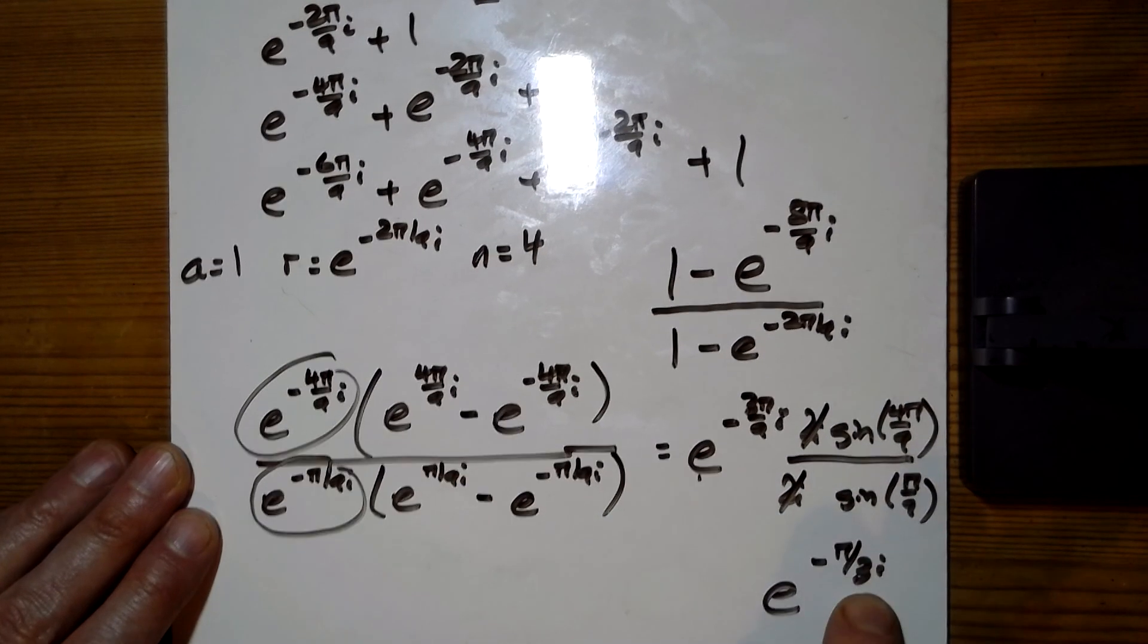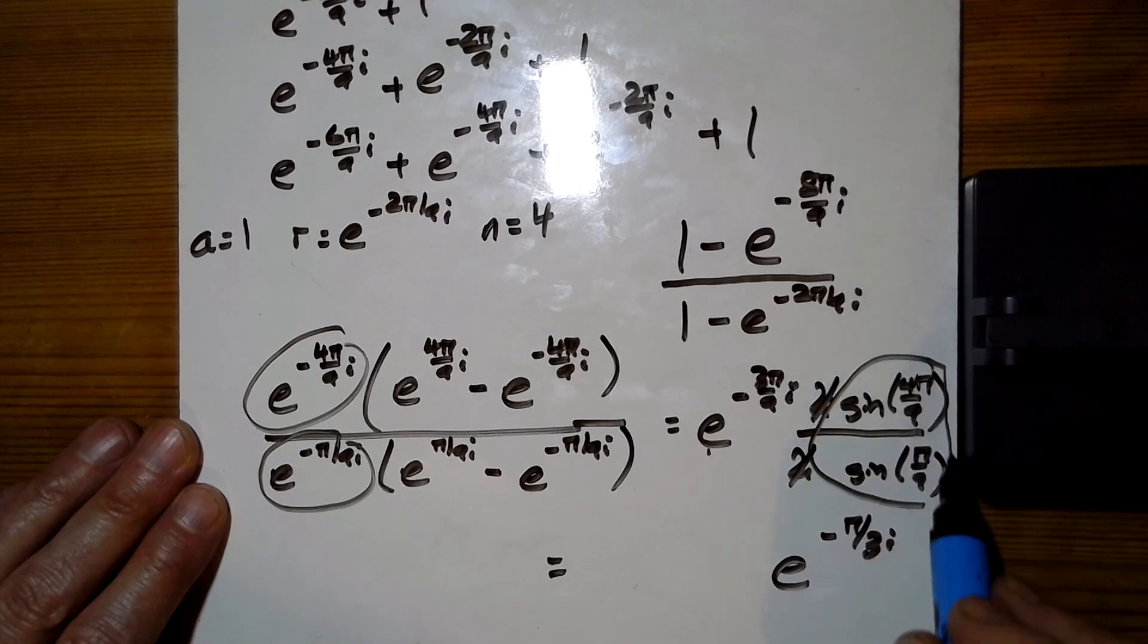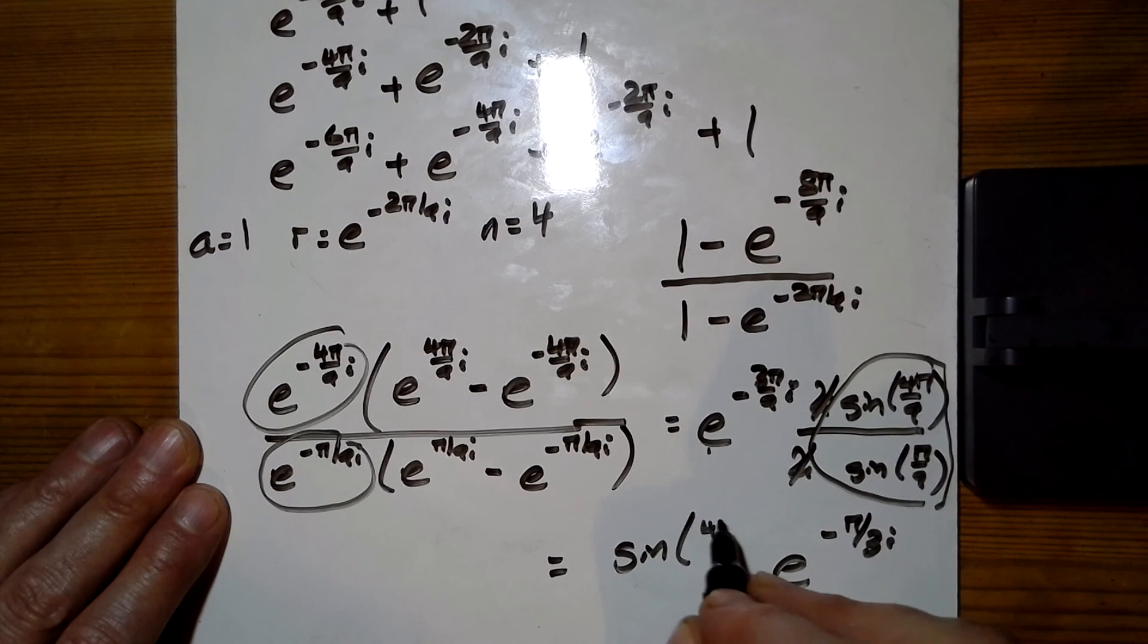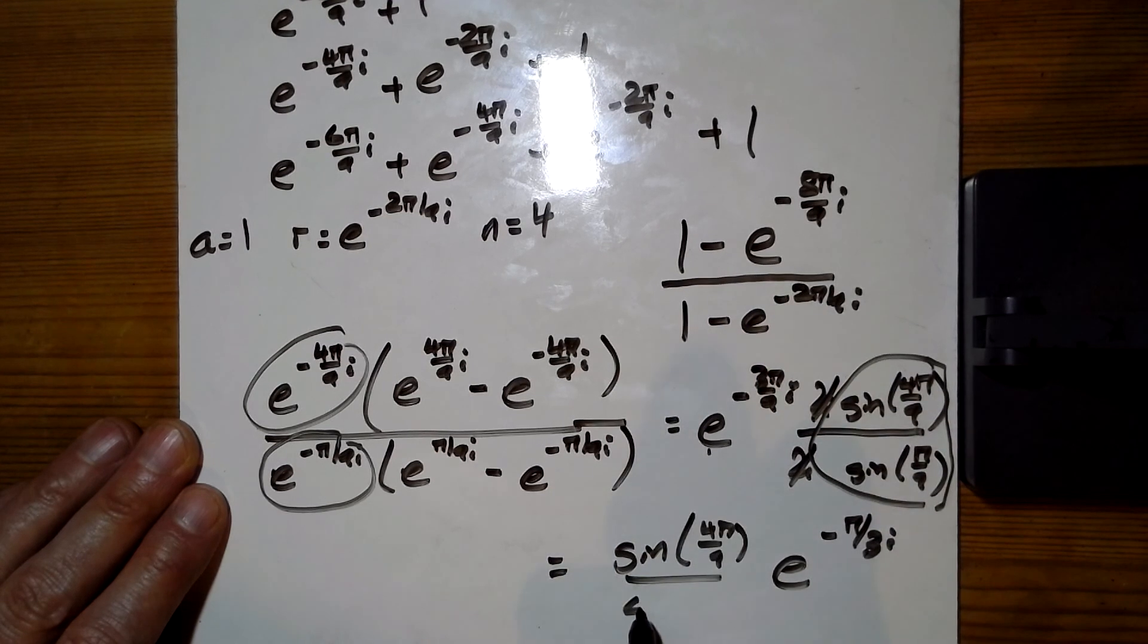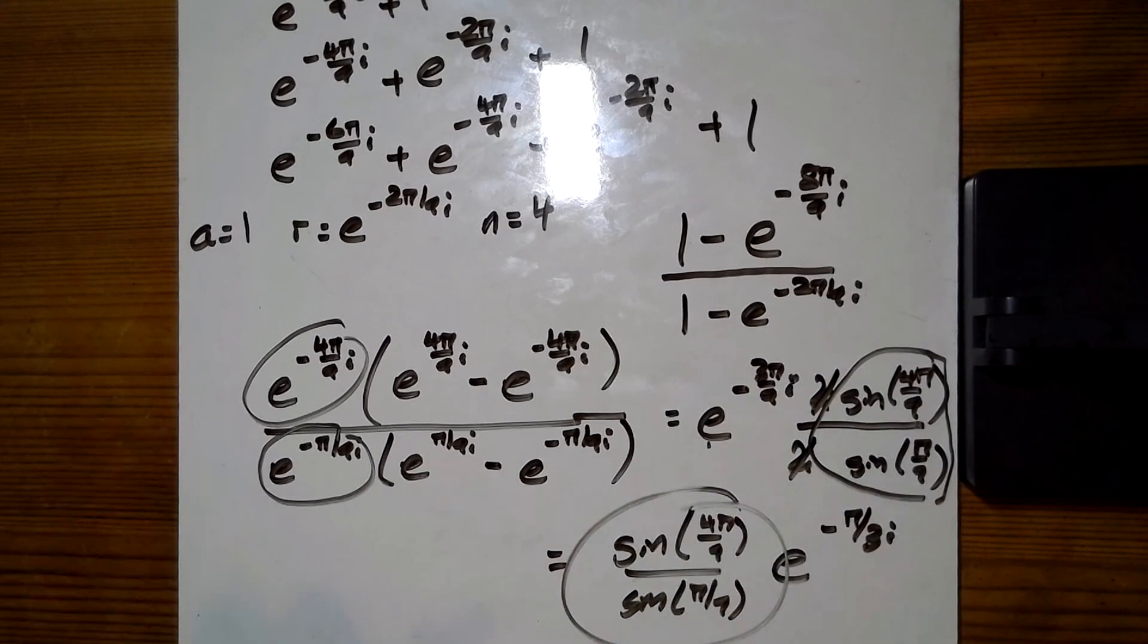So that's, you can see the argument. And the modulus is this bit here in front of it, which, as we hoped for, was the sine of 4pi over 9, and the sine of pi over 9 on the bottom. There is our modulus.